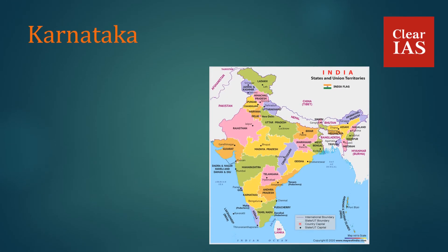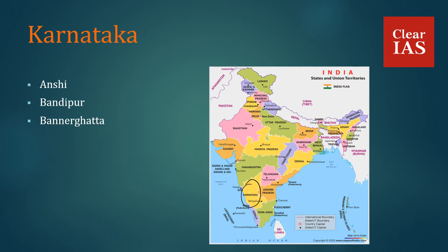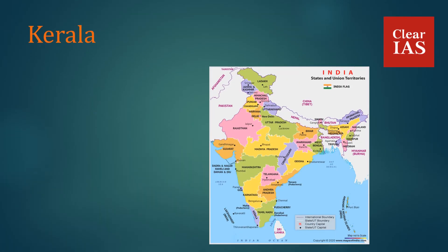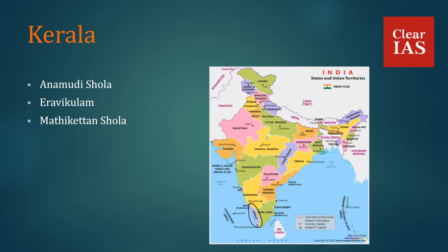In Karnataka, we have Anshi, Bandipur, Bannerghatta, Kudremukh, and Nagarhole National Park. In Kerala, we have Anamudi Shola National Park, Eravikulam National Park, Mathikettan Shola National Park, Pampadum Shola, Periyar National Park, and Silent Valley National Park.